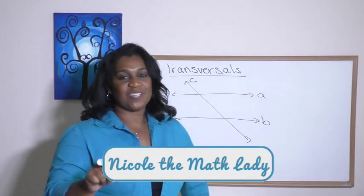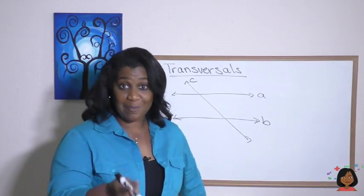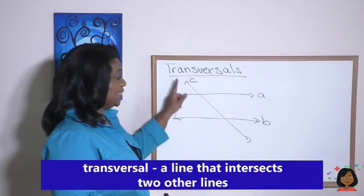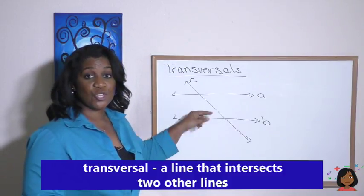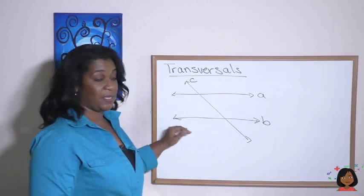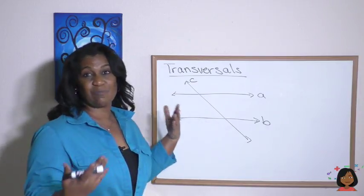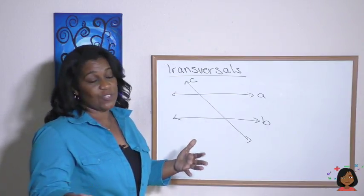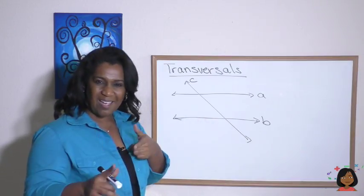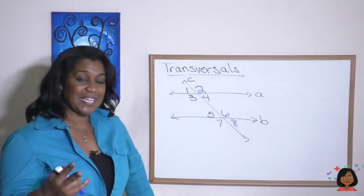Hi, it's the Golden Math Lady. Today's lesson is going to be about transversals. A transversal is any line that intersects two other lines. I have drawn lines A and B as parallel lines, and line C is my transversal. The transversal doesn't have to intersect parallel lines, but when it does, there are some very interesting things that happen.